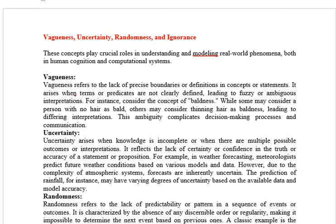Let's understand first: what is vagueness? Vagueness refers to the lack of precise boundaries or definitions in a concept or statement. Simply put, vagueness means we will not define a statement clearly. This problem arises when terms or predicates are not clearly defined. So when they are not clearly defined, this problem will arise.